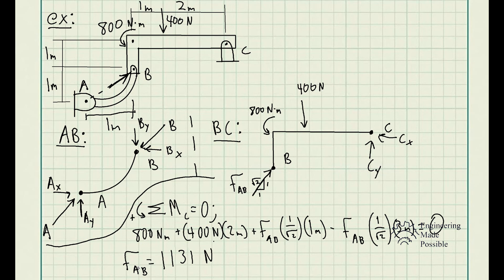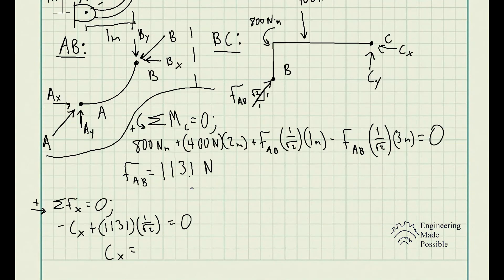Having FAB, we can now solve for the X and Y reaction components at C. For the sum of forces in the X direction: negative CX plus 1131 times the X component of FAB (adjacent over hypotenuse) equals zero, giving CX equal to 800 newtons. For the sum of forces in the Y direction, we solve for CY and get negative 400 newtons — meaning 400 newtons in the downward direction, so our initial assumption about its direction was incorrect.